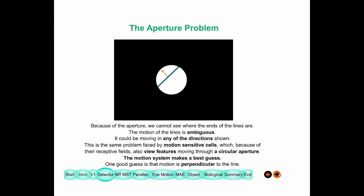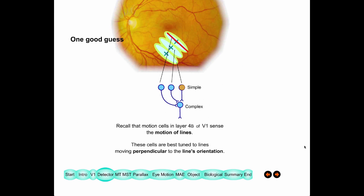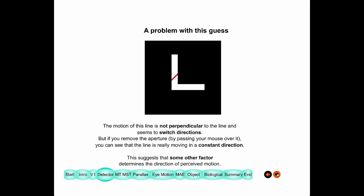Why does this happen? Just looking at a line through an aperture, we really can't tell much about the direction it's really moving. What the brain does is make a best guess — it guesses that the line is moving perpendicular to the line itself. That's a good guess, and you can see how it might do that: it combines signals from simple cells to make a complex cell, all tuned to a particular orientation, so only lines moving in that direction will activate that complex cell.